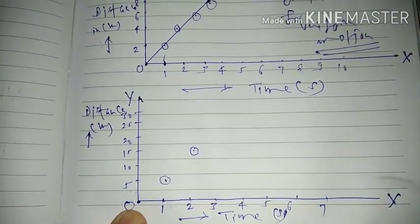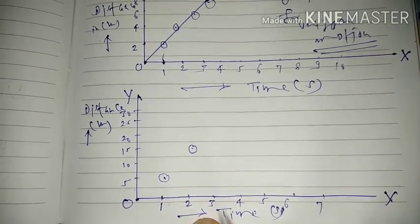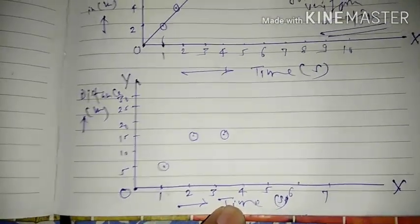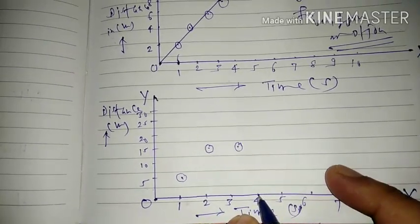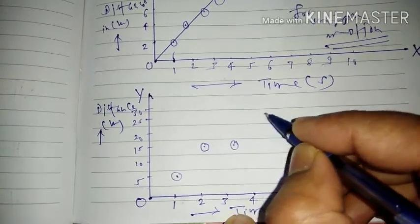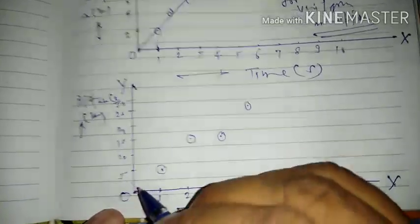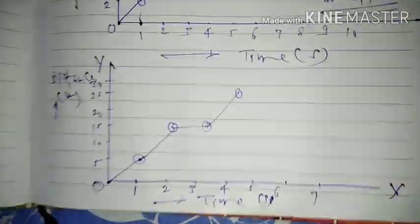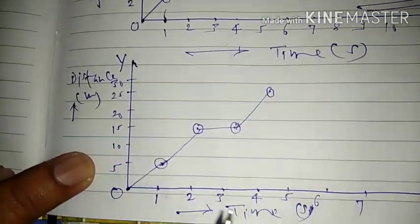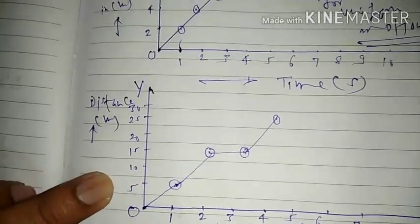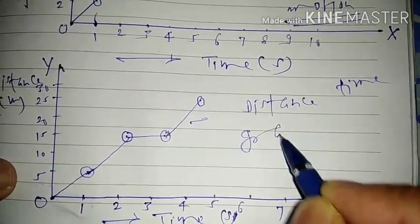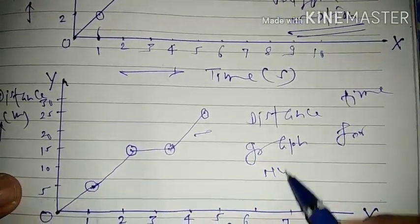At the third second the position of the object is the same due to the traffic jam. Now the road is clear, the driver accelerates the vehicle, and suddenly in the fourth second the object reaches a distance of 30 meters. The nature of this graph — if we join all these points freehand — is not a straight line. This is the distance-time graph for non-uniform motion.